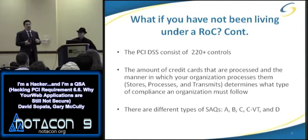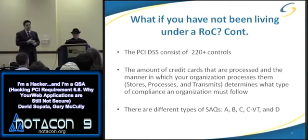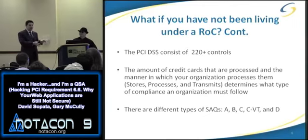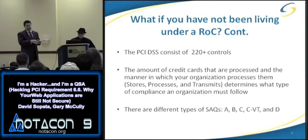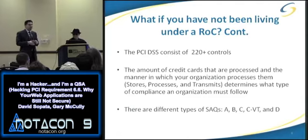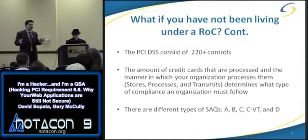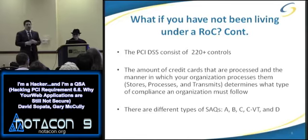A Level 3 or 4 merchant may not have e-commerce, or may not have all the internal processes that a Level 1 would. So PCI created different forms called the SAQ A, B, C, CBT, and D. Depending on how you're processing your credit card information — whether through a card swipe machine, an e-commerce site, or a retail environment with multiple stores — you fall into one of these SAQ types.